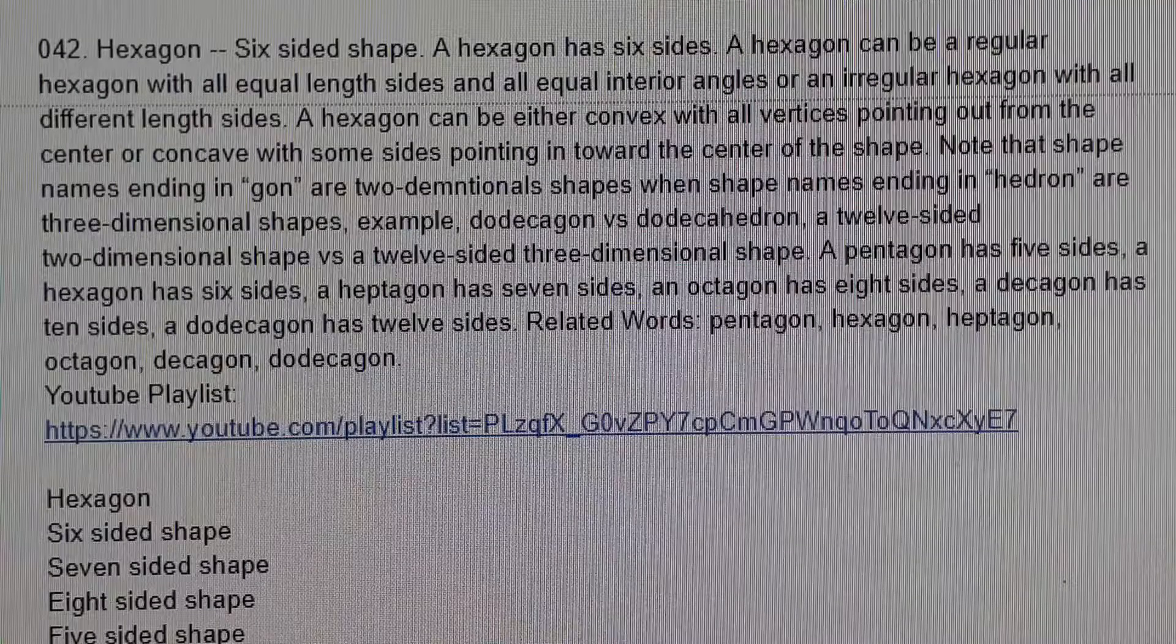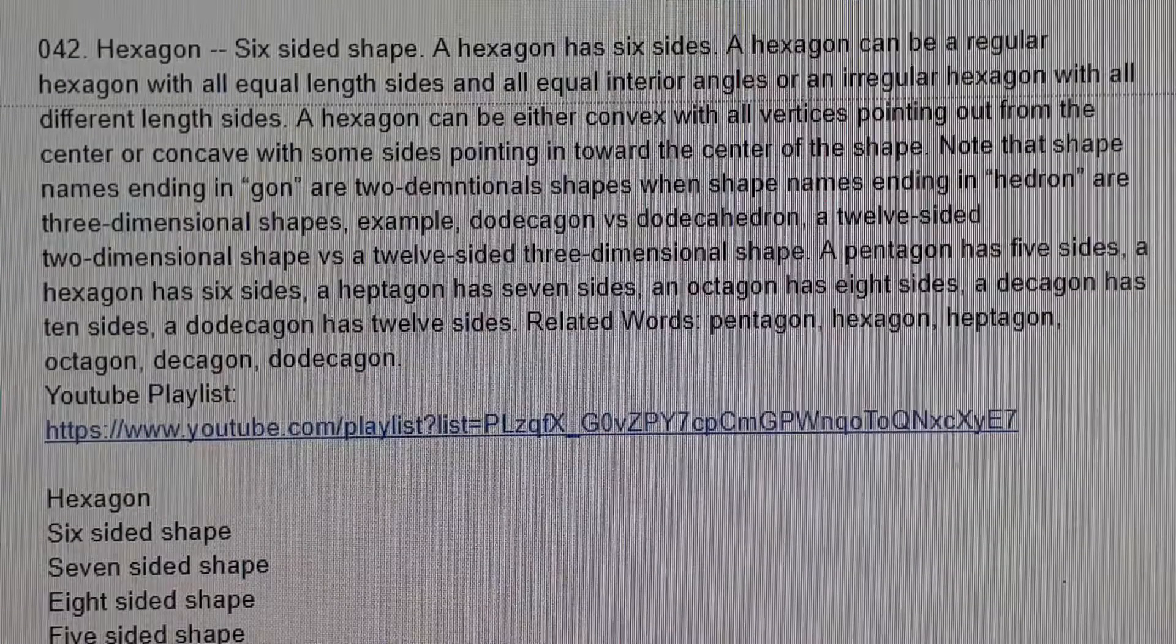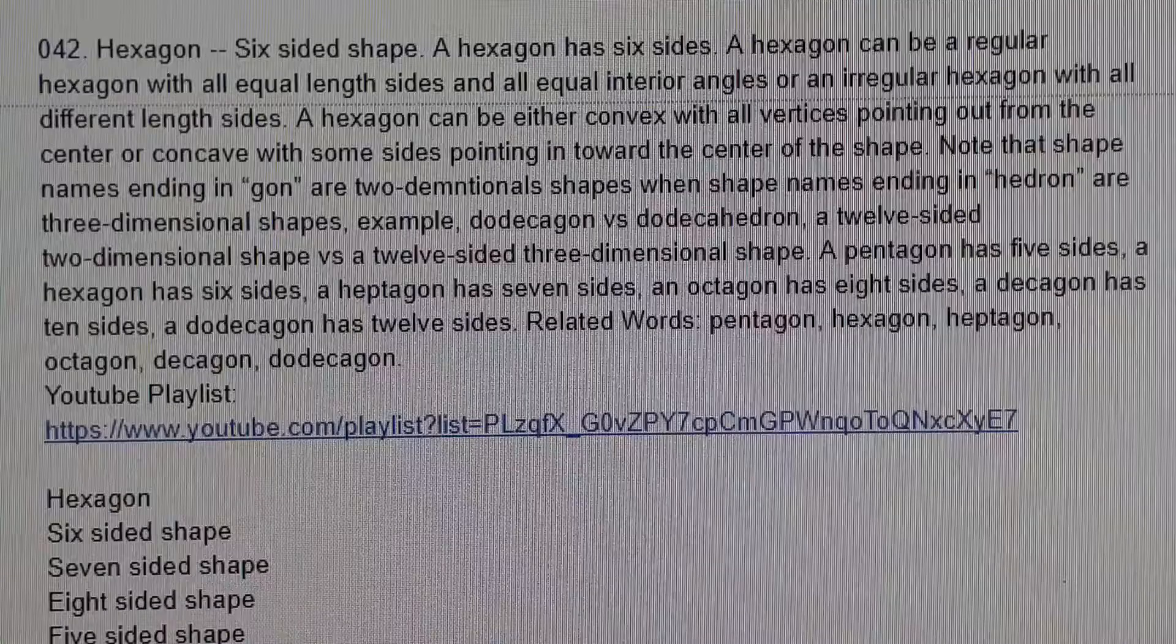A hexagon can be either convex with all vertices pointing out from the center, or concave with some sides pointing in toward the center of the shape.